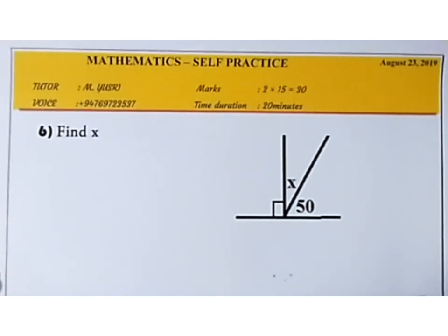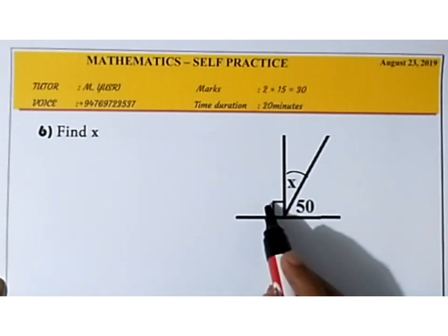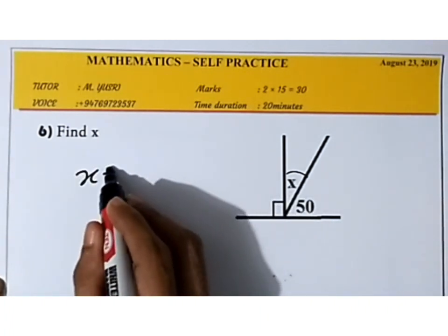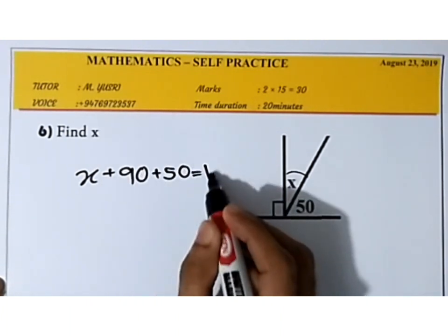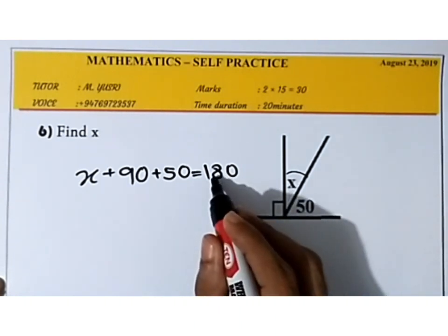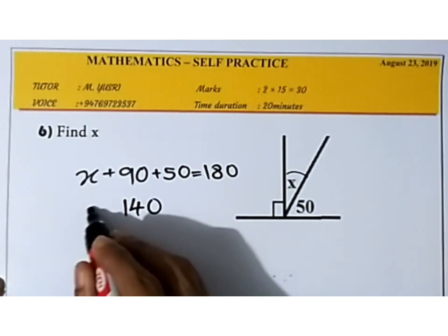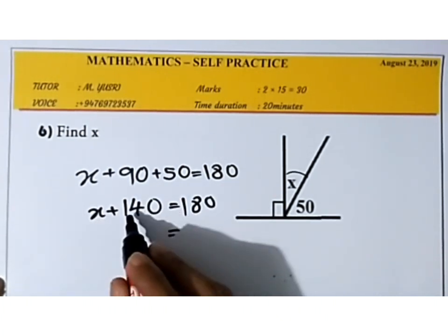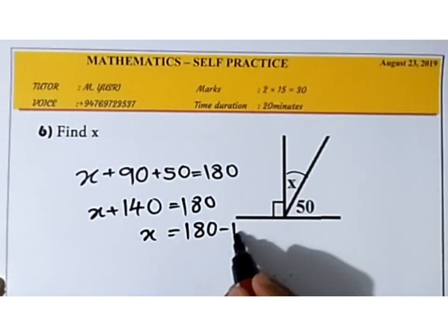To find the value of x, we apply the straight line theorem: the sum of all adjacent angles equals 180. So x + 90 + 50 = 180. Since 90 + 50 = 140, we have x + 140 = 180. Taking 140 to the right side: 180 − 140 = 40. The answer is x = 40.